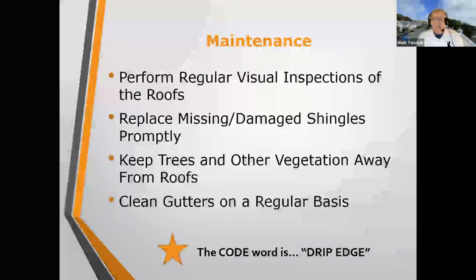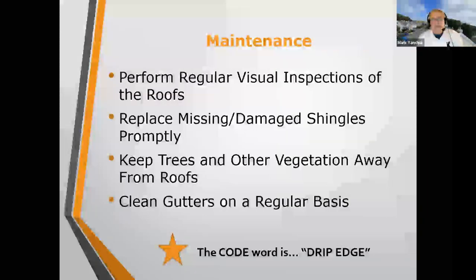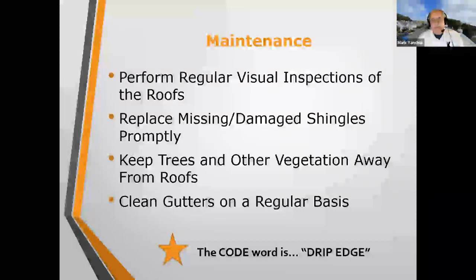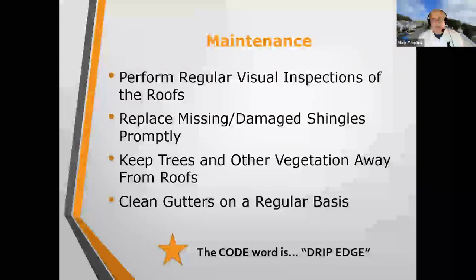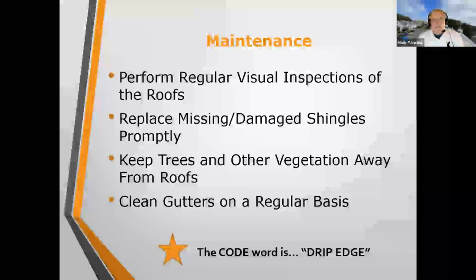When your roof is done, perform regular visual inspections. Make sure there's no shingle blow-off, nothing missing or bulging. Maintain the building: make sure leaves get cleaned off, replace any damaged shingles, keep trees off, and keep the gutters clean on a regular basis — at least twice a year. With that kind of maintenance you should have a roof that lasts you for years.